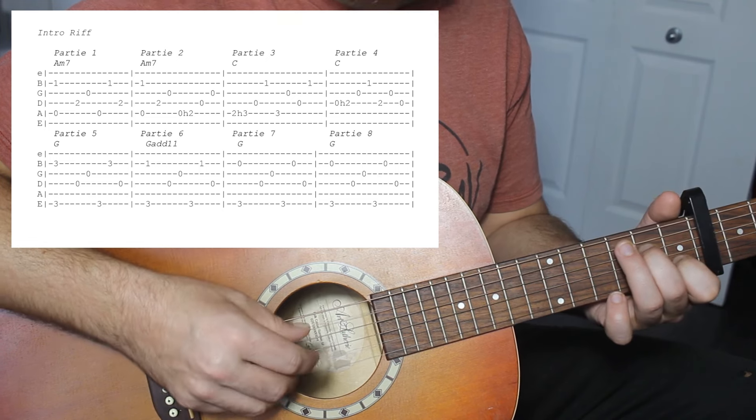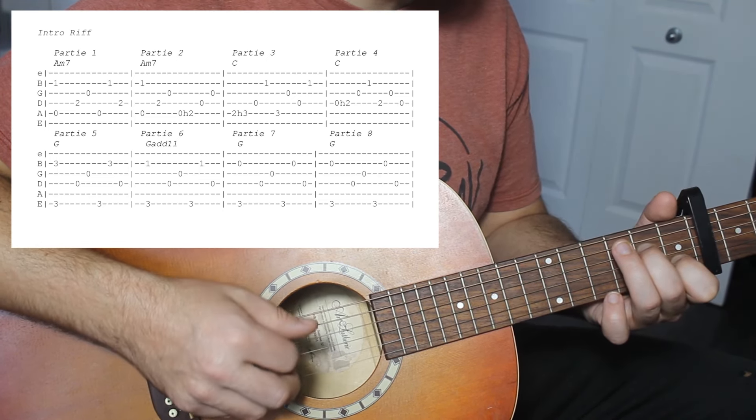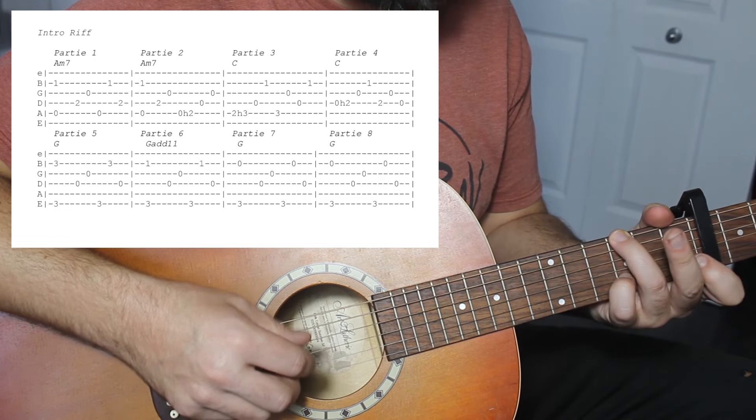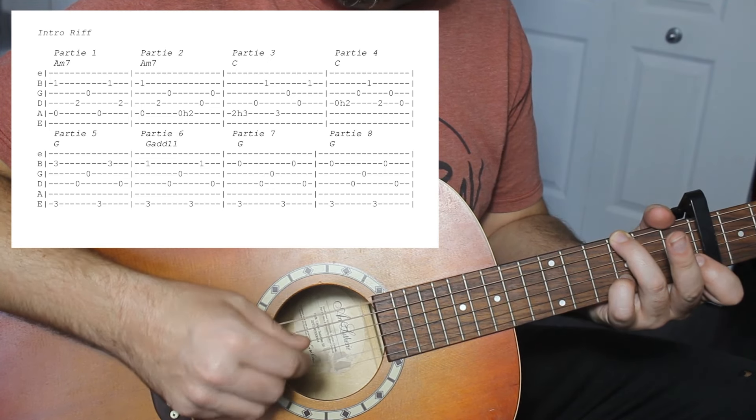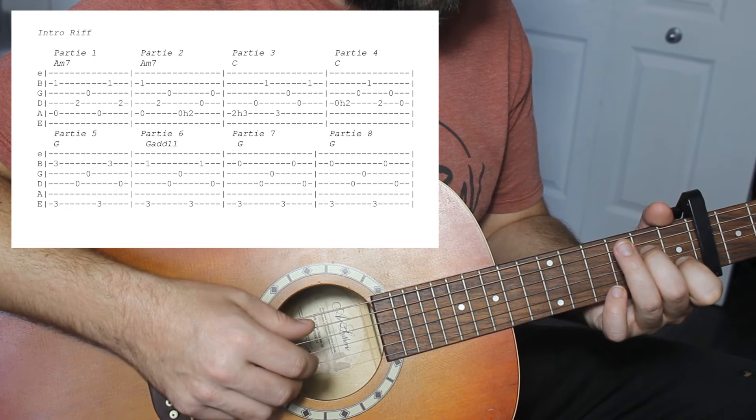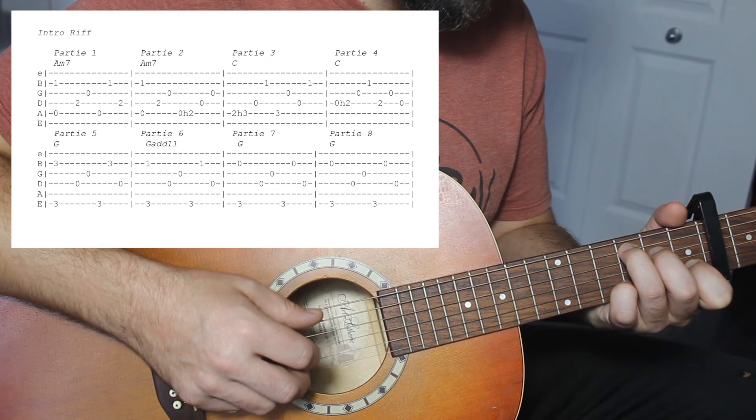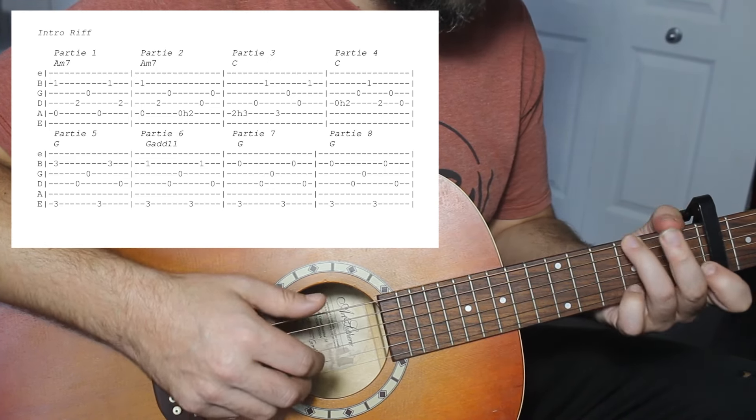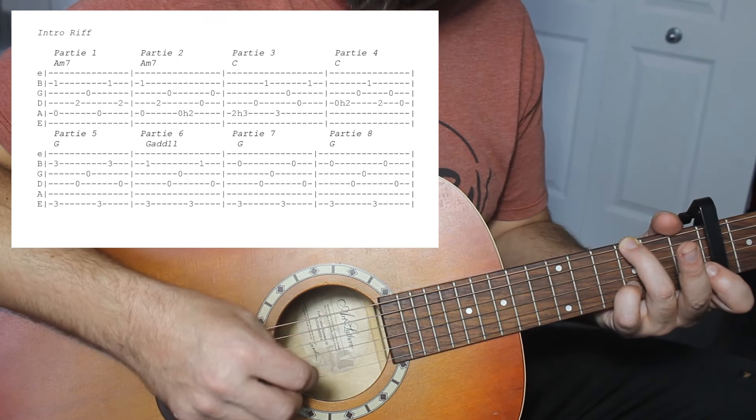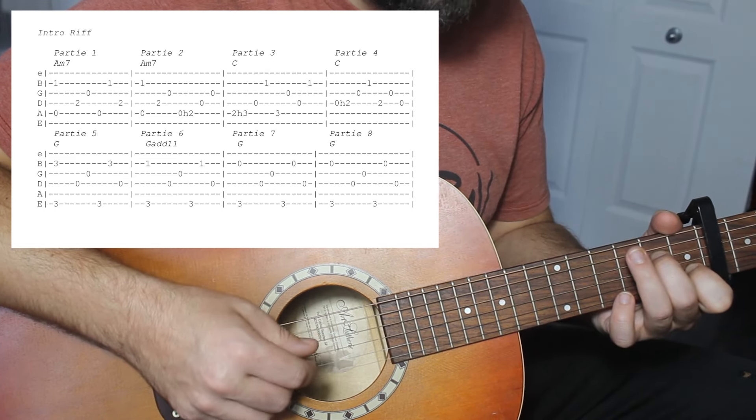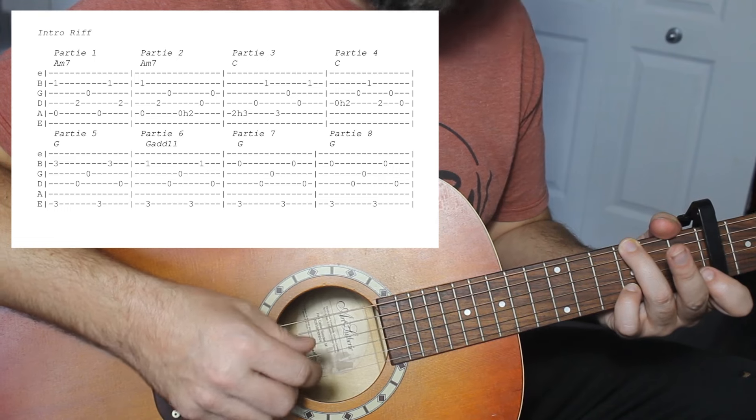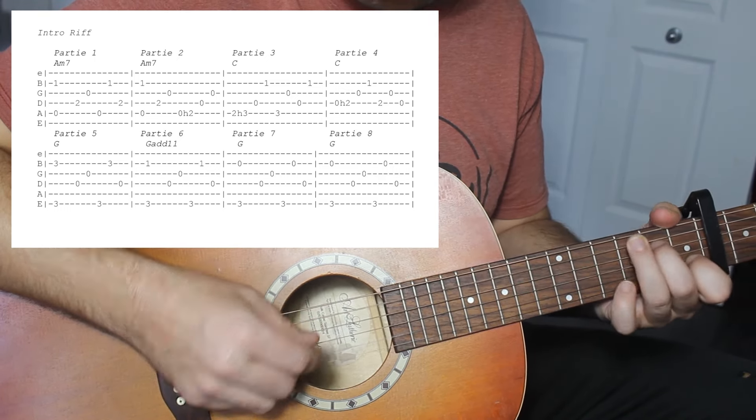C'est parti. Deux, trois, quatre. Lentement. G, quatre fois. Dernière fois. On recommence. Dernière fois. Là, on peut le faire un petit peu plus rapide si vous êtes capable. Parfait, on passe à l'étape suivante.